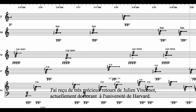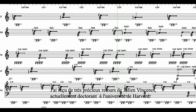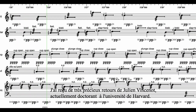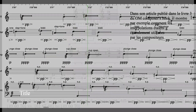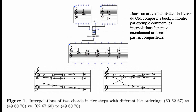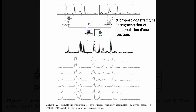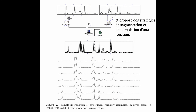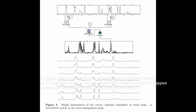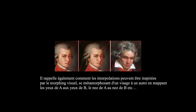I received very valuable feedback from Julien Vaston, currently a PhD candidate at Harvard University. In his article published in Open Music Composers Book, Volume 3, he shows how interpolations were typically used by composers, and proposes strategies for segmentation and interpolation of a function. He also recalls how interpolation can be inspired by visual morphing — morphing from one face to another by mapping the eyes of A to the eyes of B, the nose of A to the nose of B, and so on.